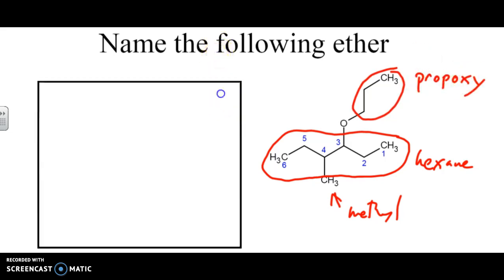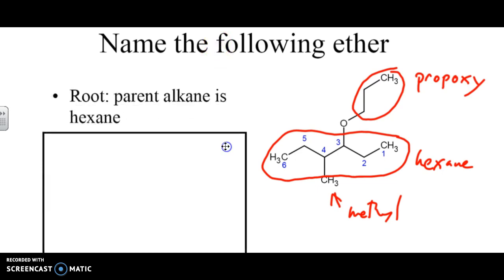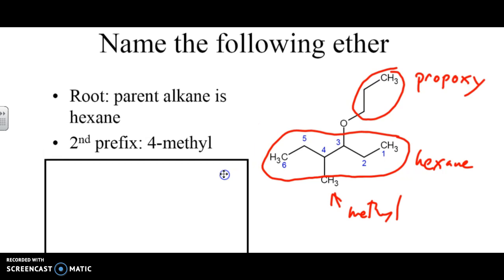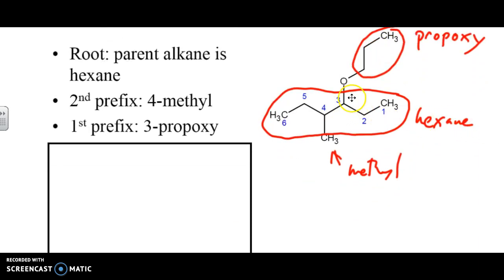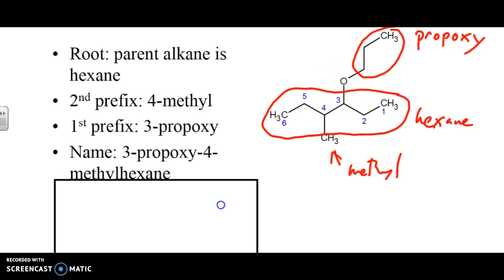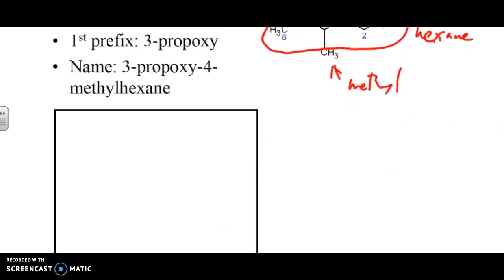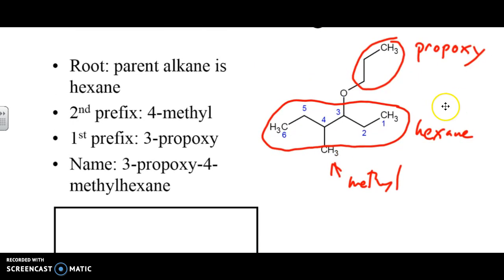So now we've got these three things in mind. The parent alkane is hexane. The second prefix is four-methyl. The first prefix is three-propoxy. We need it at spot three because we need to indicate where the ether branches off. So therefore, our name is three-propoxy-four-methylhexane.